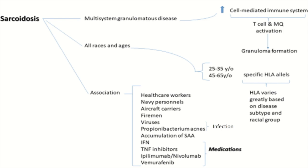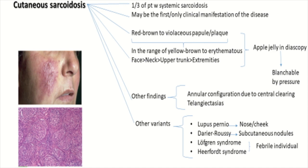It is associated with specific HLA alleles, which vary based on disease subtypes and racial groups. The definite pathogenesis of sarcoidosis is not fully defined, but it has been associated with certain occupations, infections, and medications — including healthcare workers, Navy personnel, aircraft carriers, and firemen. Implicated agents include viruses, Propionibacterium acnes, and drugs such as interferon and TNF-alpha inhibitors.